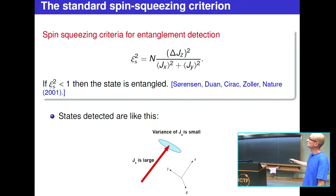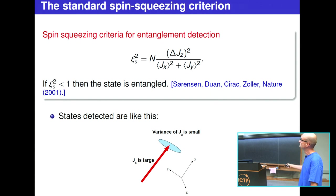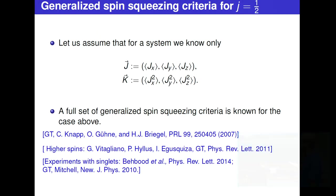What kind of states give a spin-squeezing value smaller than one? A state for which the spin polarization is large in one direction and the variance is small in an orthogonal direction. Later it will be clear why this is good for metrology. Generalized spin-squeezing criteria have also been developed. For certain cases we have a full set: if you have only these collective input parameters in a multiparticle system, there is a criterion that detects all detectable entanglement from them.